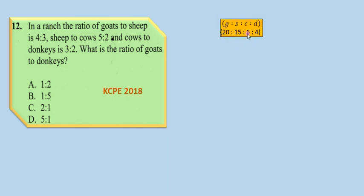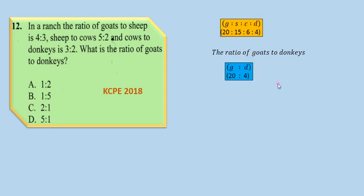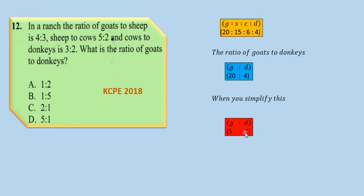Since we are asked for the ratio of goats to donkeys, we can see from the combined ratio that goats to donkeys is 20:4. This ratio can be simplified: 20:4 simplifies to 5:1. Therefore, the candidate should have selected D as the answer.